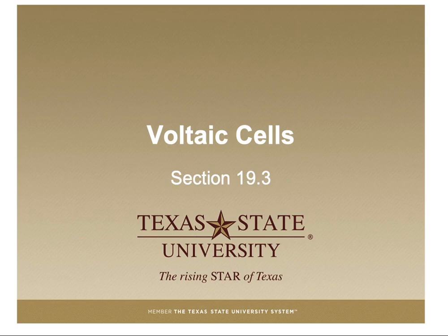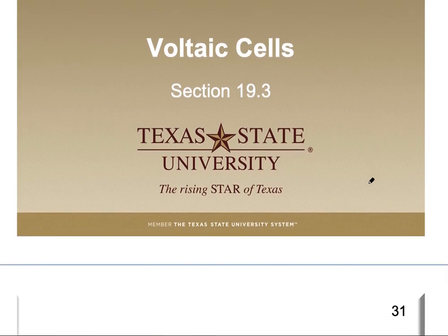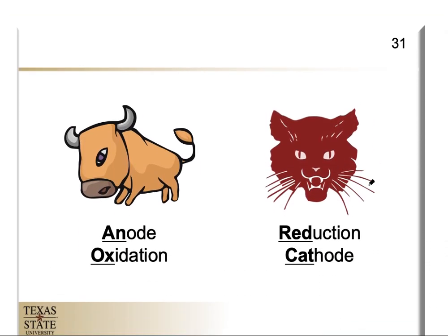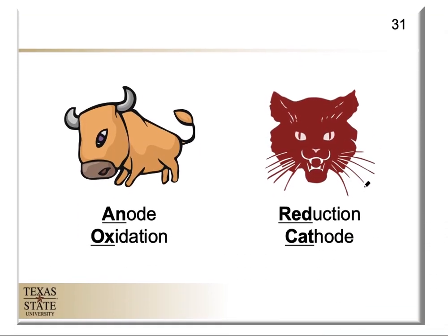There are two different types of electrochemical cells. One of them is a voltaic cell in which we are going to be utilizing a spontaneous reaction to give us electricity, and that's what we're going to focus on now. I just wanted to provide you with this graphic here to help you remember what happens at either of the two electrodes that we have in a voltaic cell.